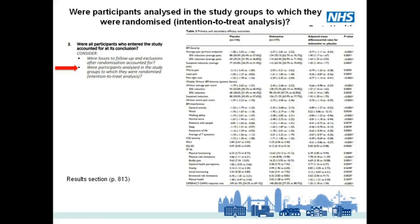The losses to follow-up showed that the control group had 176 participants at the start of the trial and 162 at the end. The ITT analysis should still account for all 176 participants, which it did, as Table 2 on page 813 shows.